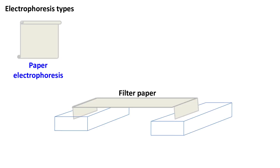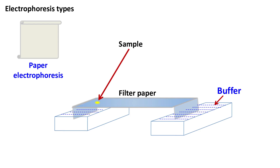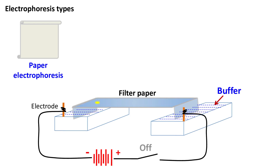Paper electrophoresis is one of the simplest electrophoresis techniques because the separation is carried out on a piece of paper. A strip of filter paper is taken and its ends are dipped in a tank filled with buffer. Once the paper strip becomes wet, the sample is loaded. When an electric current is switched on, the sample molecules are separated based on their net charge.